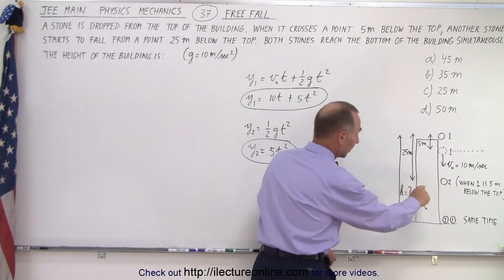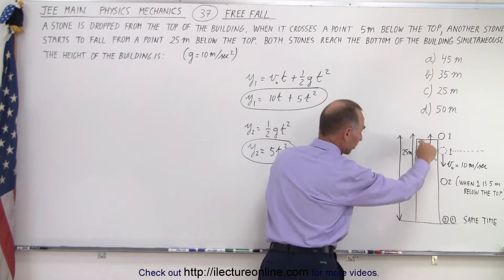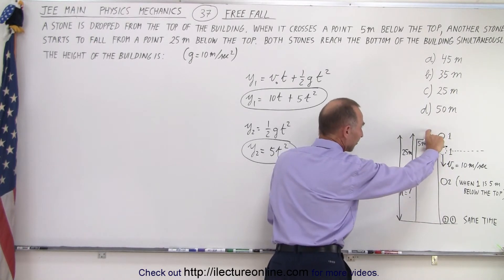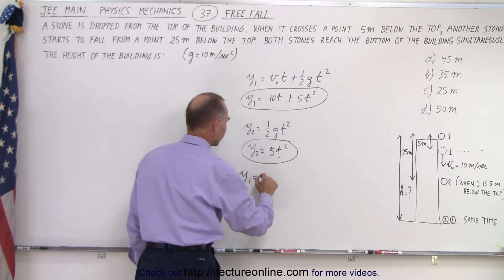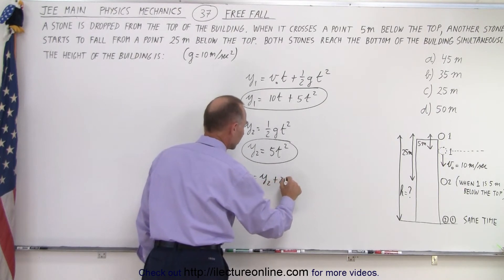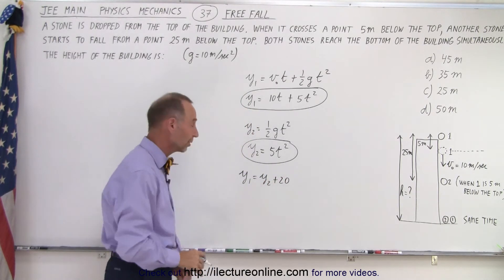Now, we know that this rock is dropped 25 meters below the top, so we subtract 5 from that. That means that y1 is equal to y2 plus 20. y1 is 20 more than y2.